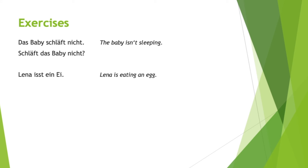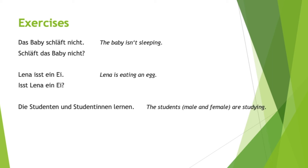'Lena isst ein Ei' — Lena is eating an egg. How do you ask if Lena is eating an egg? Isst Lena ein Ei? Next: 'Die Studenten und Studentinnen lernen' — the students are studying, male and female, because we said Studenten und Studentinnen. How do you ask 'Are the students studying?' Lernen die Studenten und Studentinnen? Good.